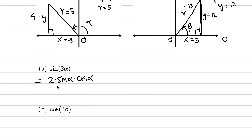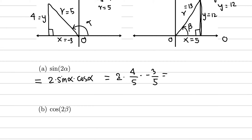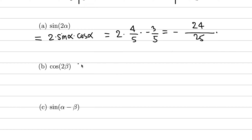Now we compute sin 2α = 2·sin α·cos α using the first triangle. sin α = y/r = 4/5 and cos α = x/r = -3/5. So sin 2α = 2·(4/5)·(-3/5) = -24/25.